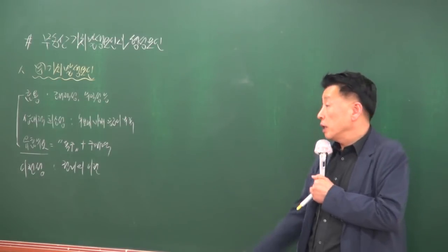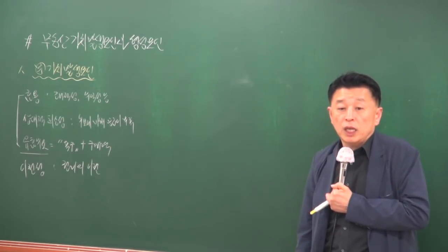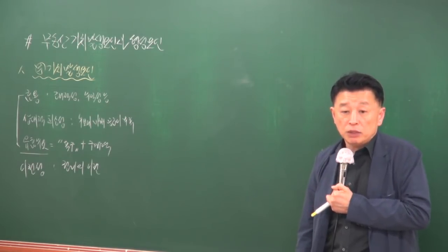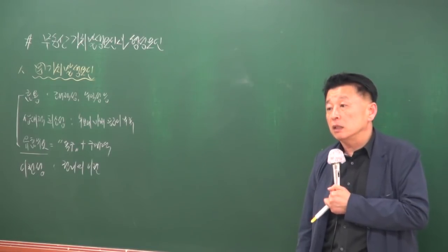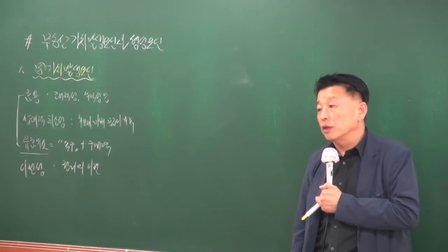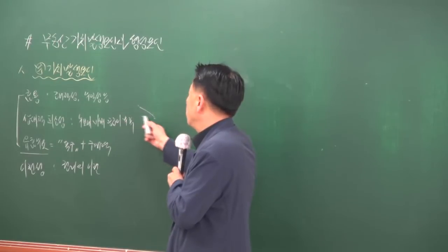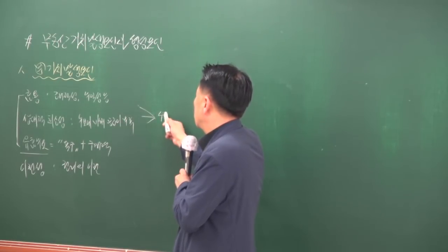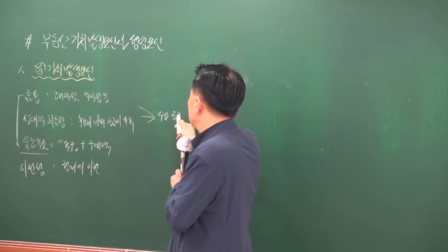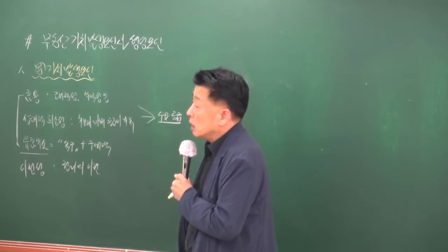시험에서 효용, 상대적 희소성, 유효수요 세 가지 중 하나만 충족되어도 가치가 발생한다고 틀리게 출제된 적이 있습니다. 위의 세 가지는 수요와 공급을 가리킵니다.